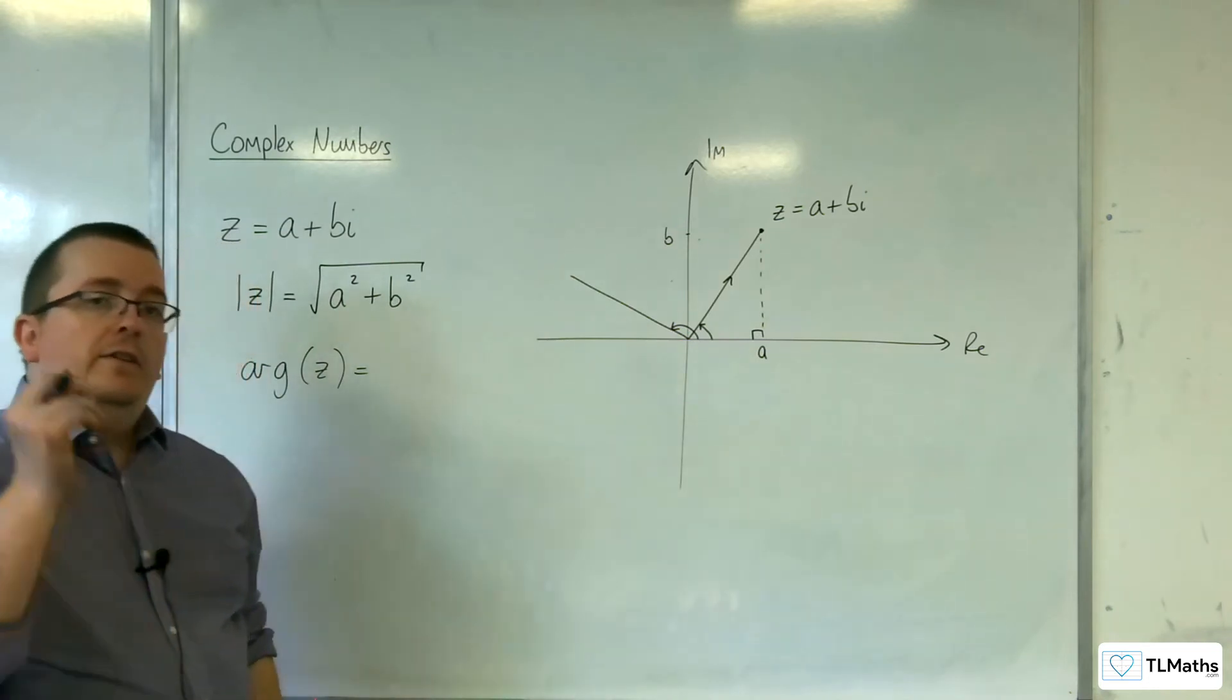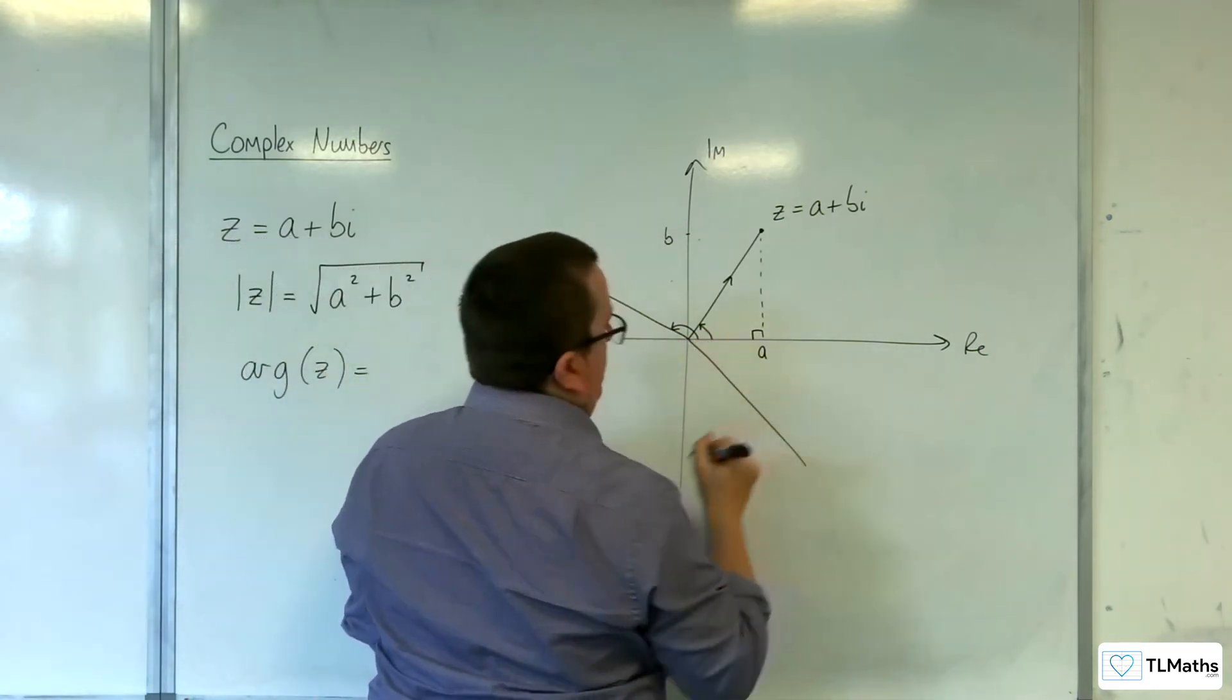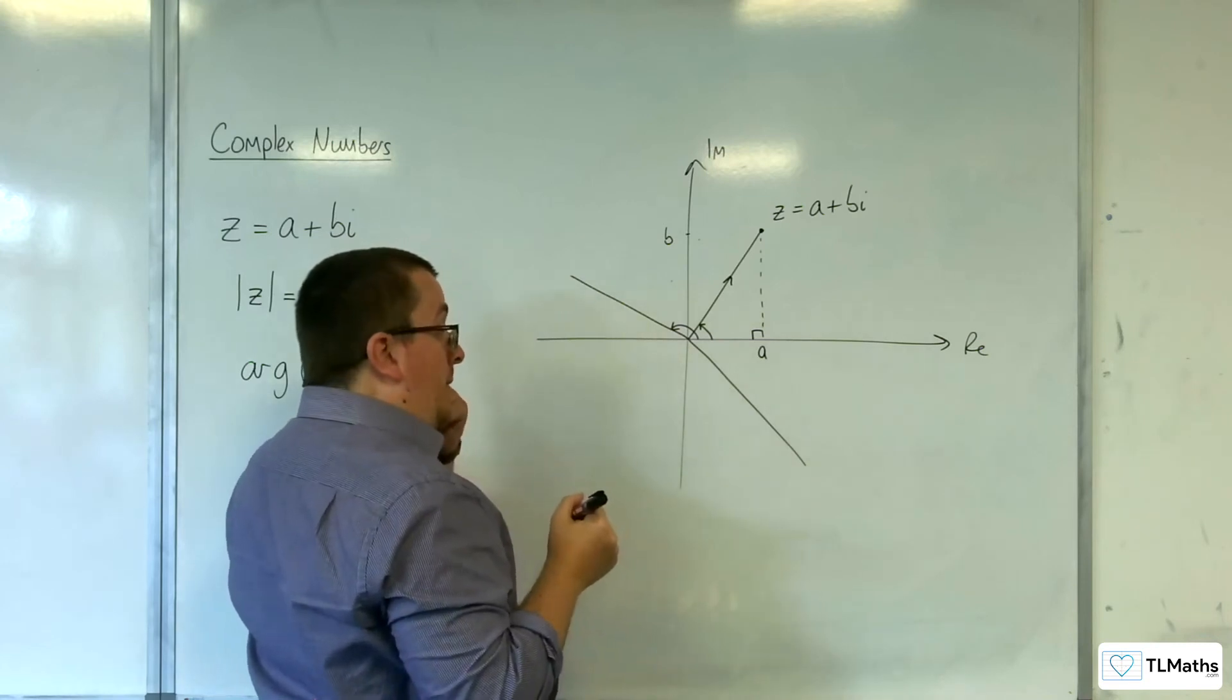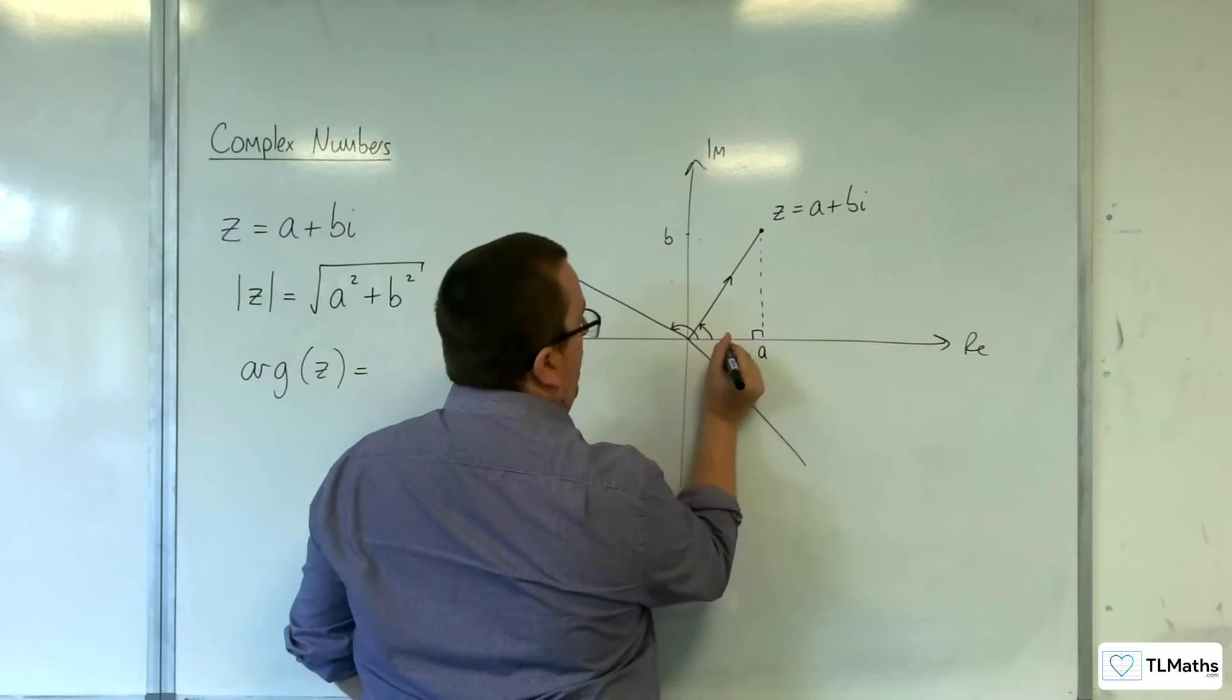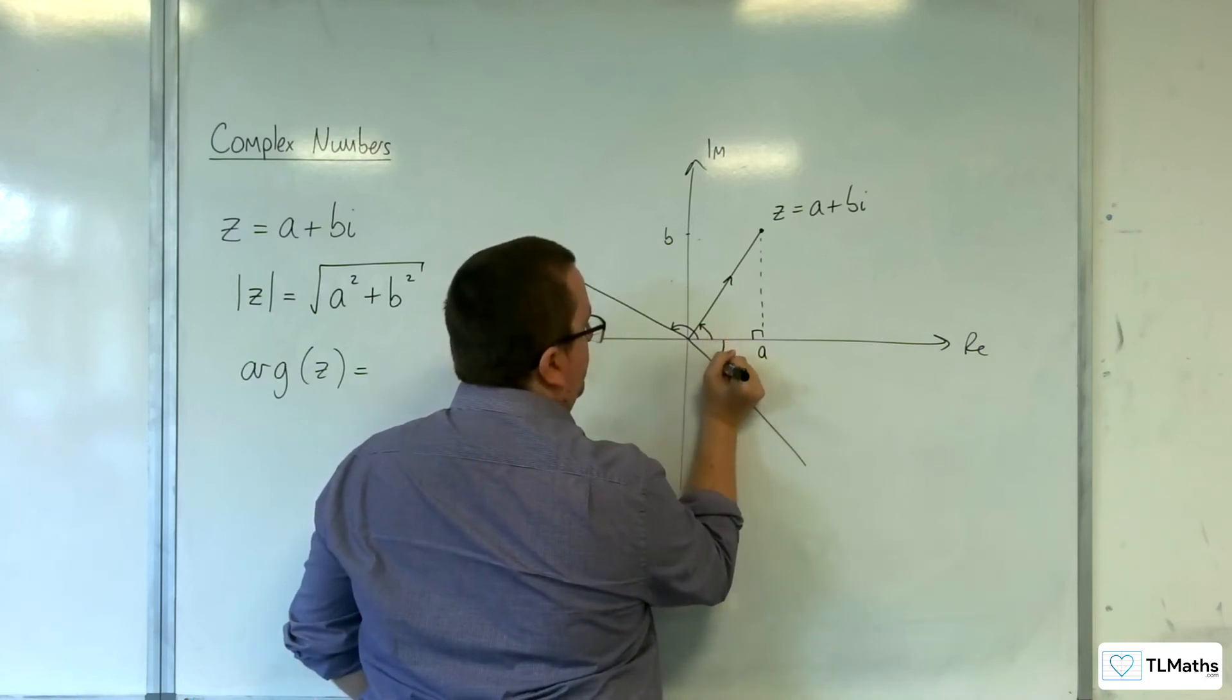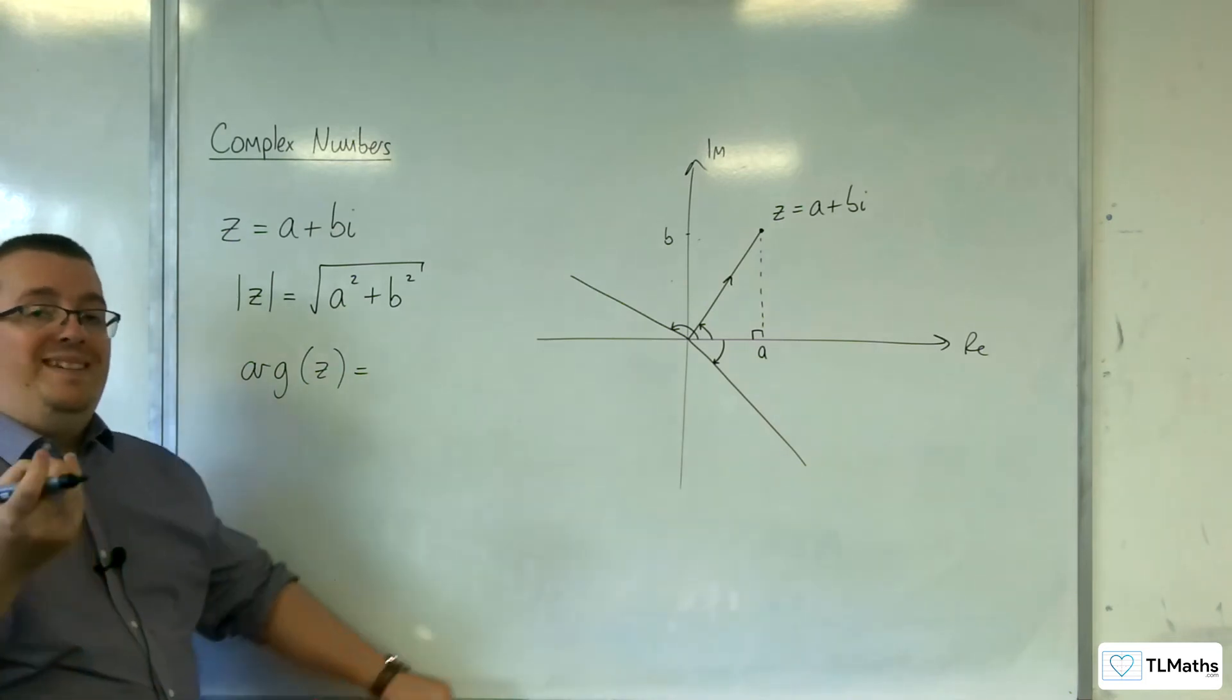If, on the other hand, it is below the real axis, so let's say down there, then it's still measured from the real axis, but now clockwise. And the angle is taken to be negative.